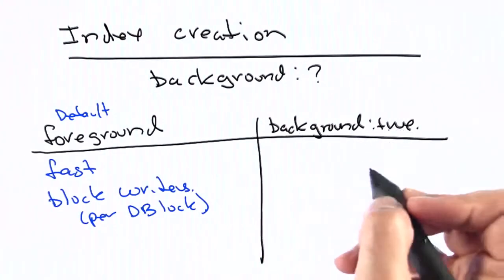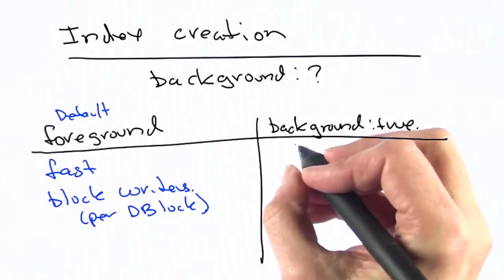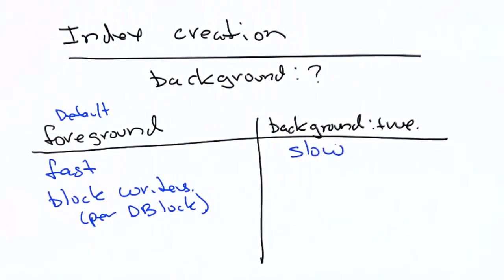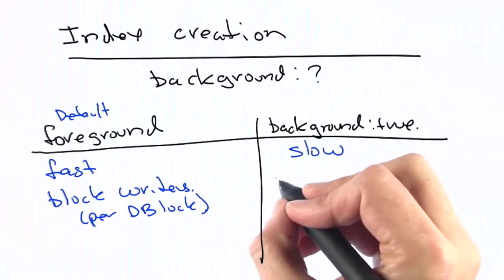On the other hand, if you prefer, you can use the background true option, in which case it'll be a bit slow, and sometimes as much as we've heard reports of anywhere from twice as slow to three or four or five times as slow, but writes can happen concurrently. It does not block the writers.